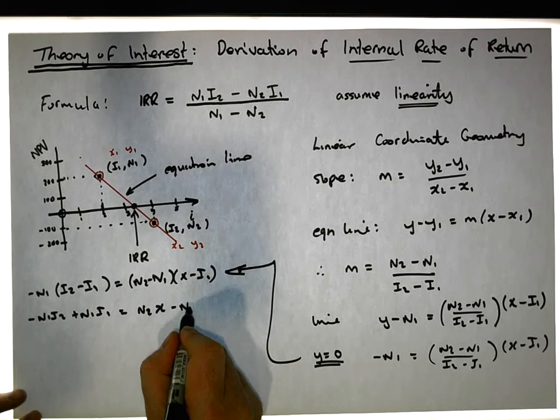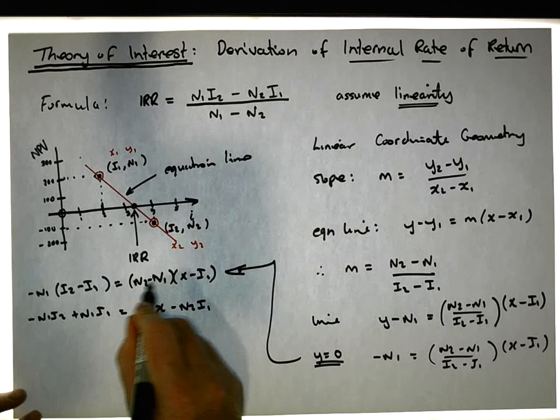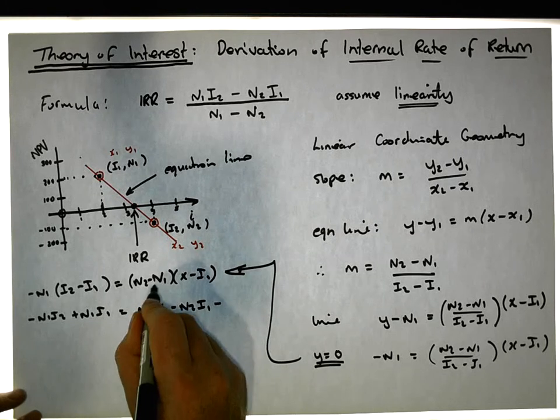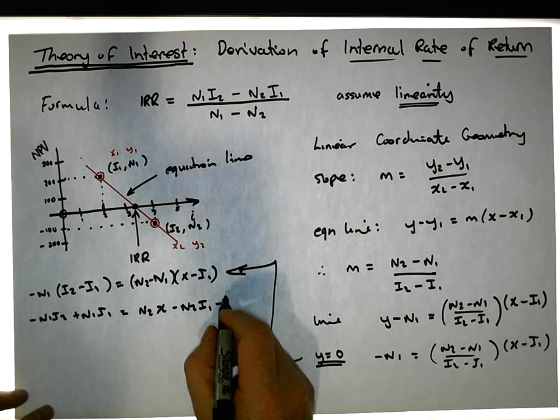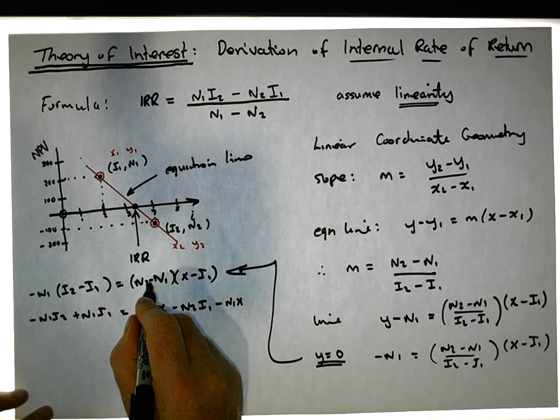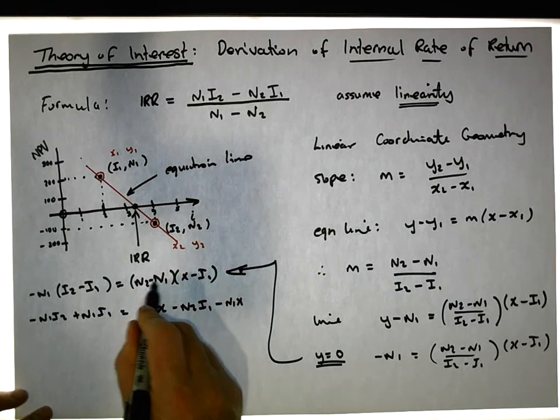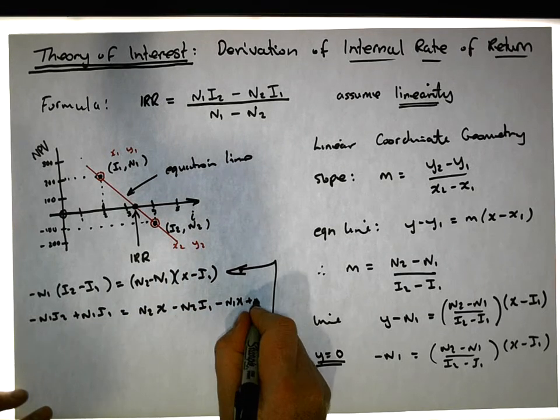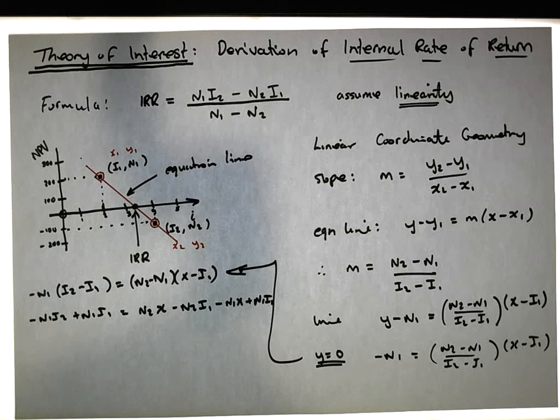And then we have minus n1 x, and finally n1 times the i1, negative times negative is a plus n1 i1. And what we can actually see is some things cancel out.